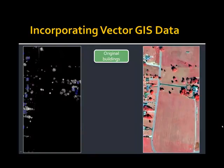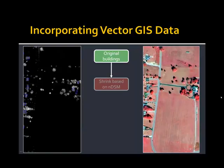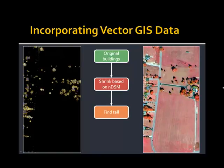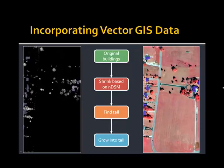We wanted to leverage existing data sets as much as possible, and Jefferson County had a building polygon data set. Unfortunately, while those polygons accurately show the location of buildings, they're not very accurate with respect to shape and size. So using eCognition, we brought these polygons in, then built a rule that shrunk those polygons based on the normalized digital surface model, followed by an image segmentation and classification process. We then used an iterative growing process to grow those buildings into areas that appeared — based on LiDAR and imagery characteristics — to look like buildings, resulting in a much more accurate representation.